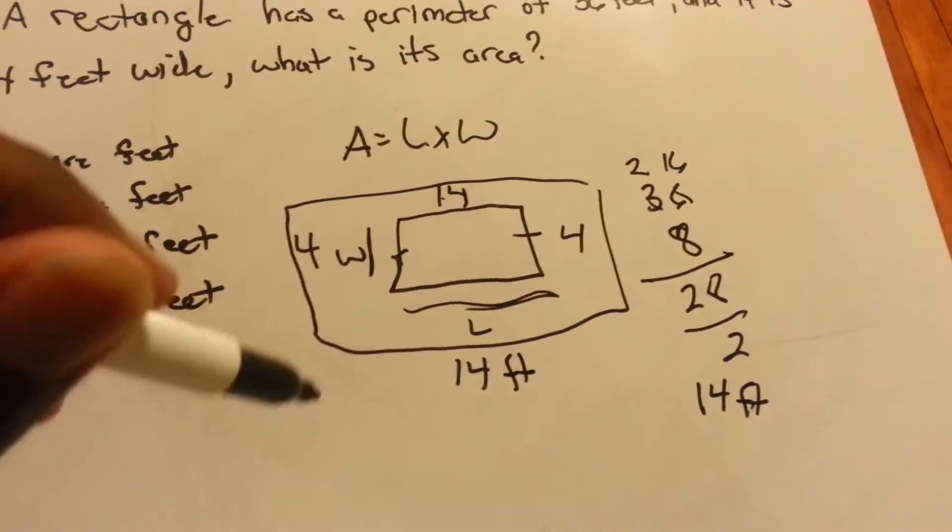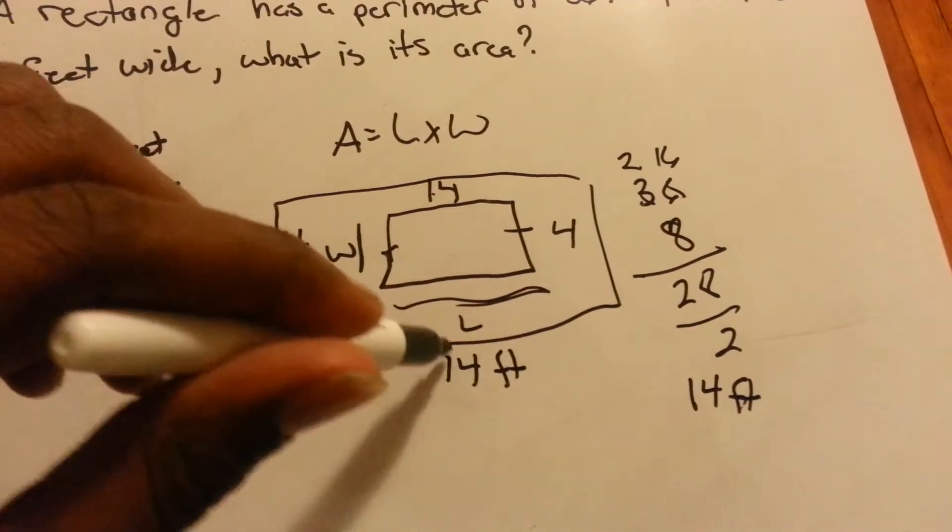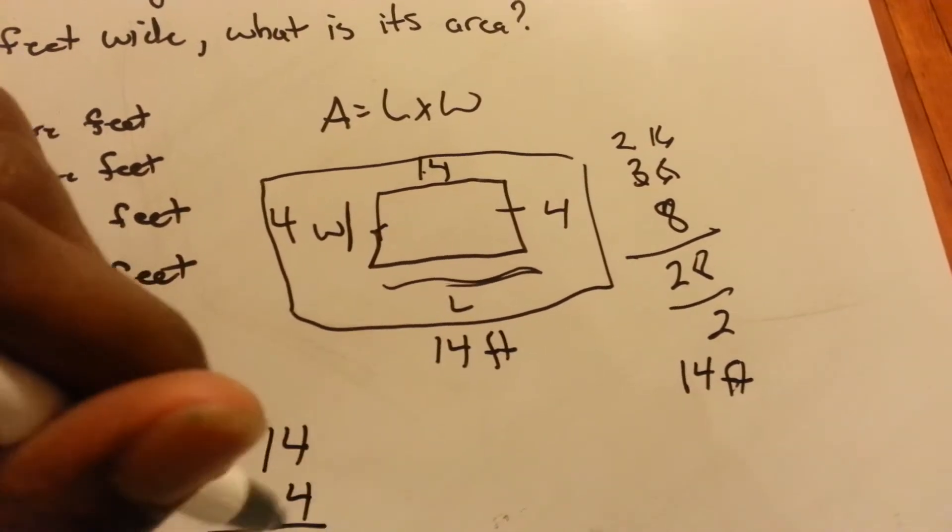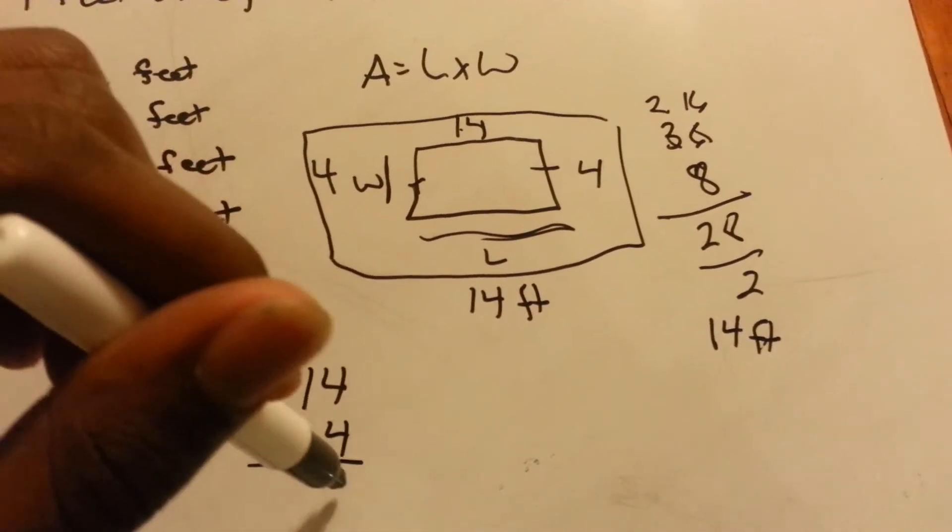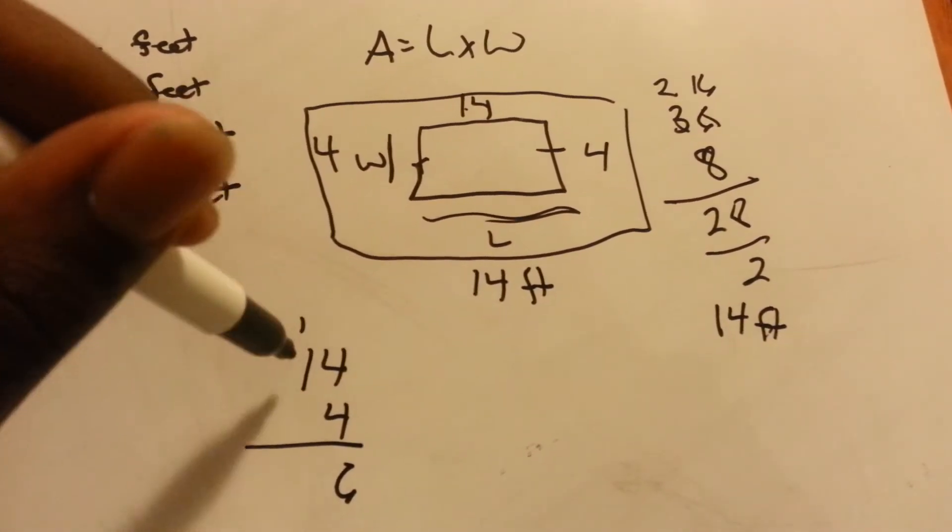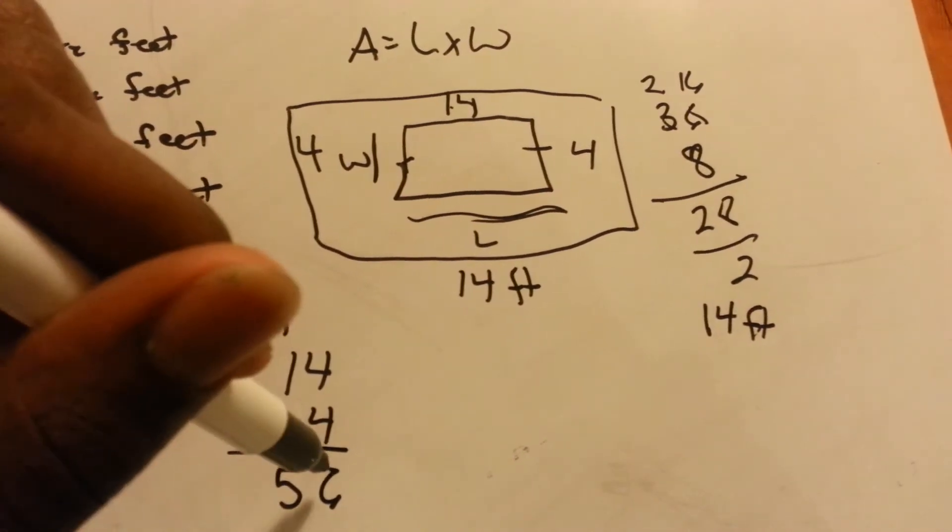So to find the area, we just multiply length times width, 14 by 4. 4 times 4 is 16, carry the 1. 4 times 1 is 4, plus 1 is 5. 56.